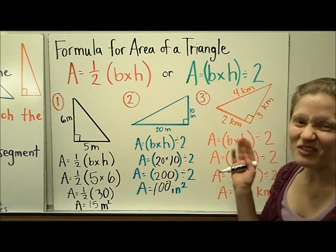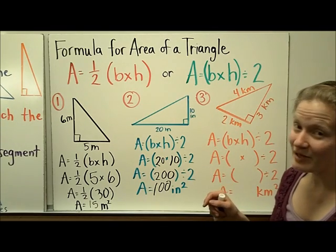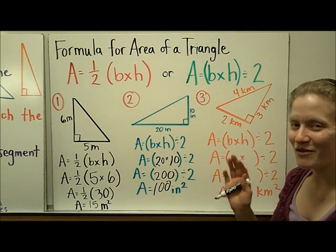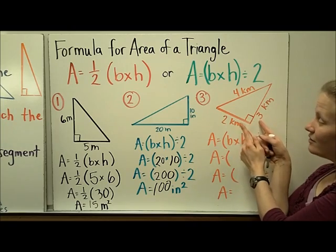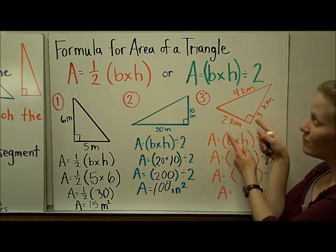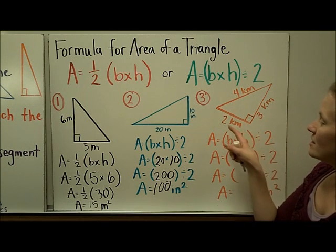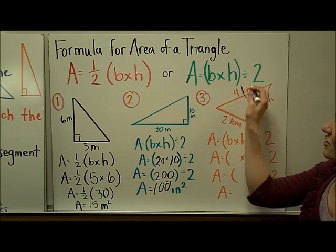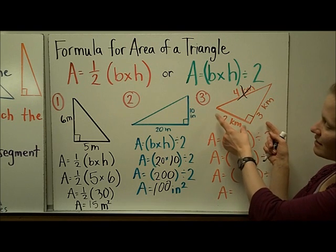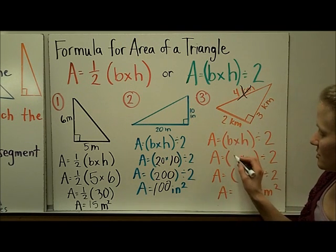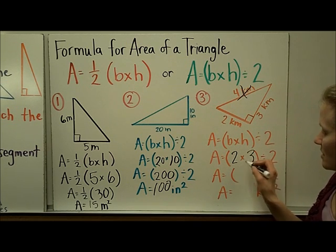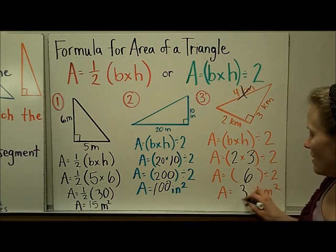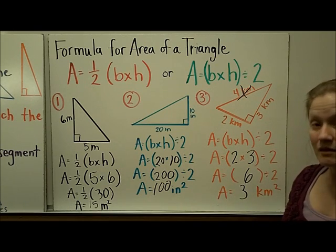Finally, don't let this problem trick you. Notice they have given you all three measurements. But you must know that the formula for area of a right triangle requires finding the right angle and using the two sides coming out of it, the two perpendicular sides. Forget about this length called the hypotenuse, the one opposite the right angle. This would be the base and this the height. The base is 2 kilometers, the height is 3 kilometers. Two times three is six. Six divided by two is three. The area of this triangle is 3 kilometers squared.